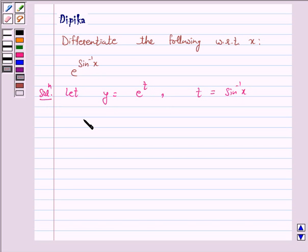Therefore dy by dt equals e raised to power t, and dt by dx equals 1 over the square root of 1 minus x squared.